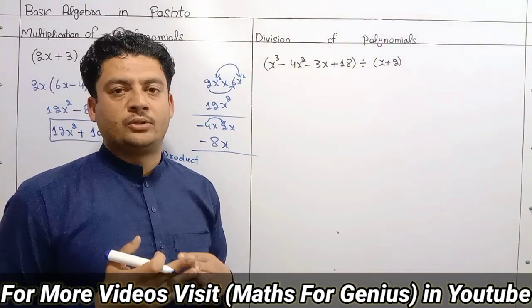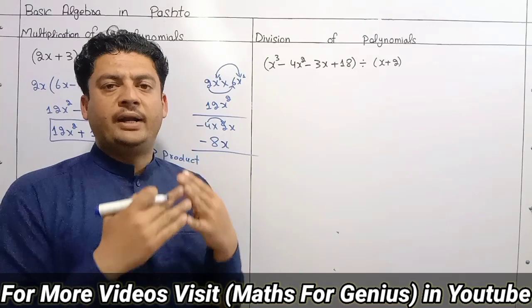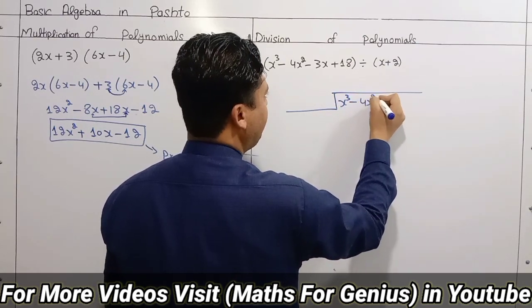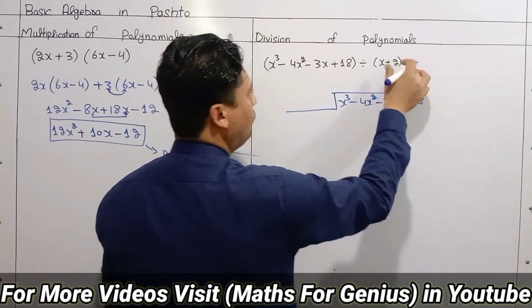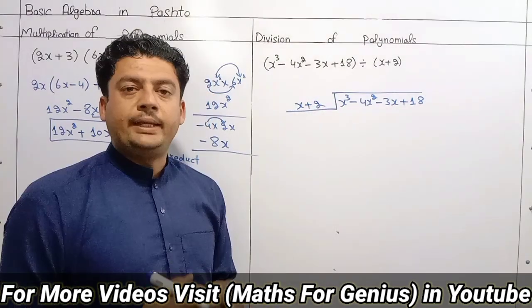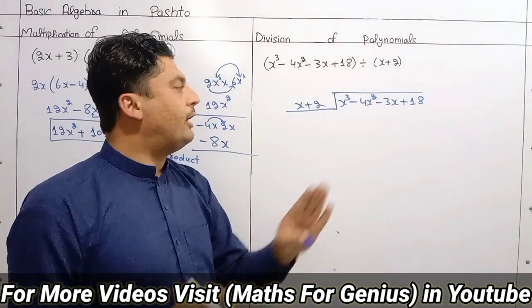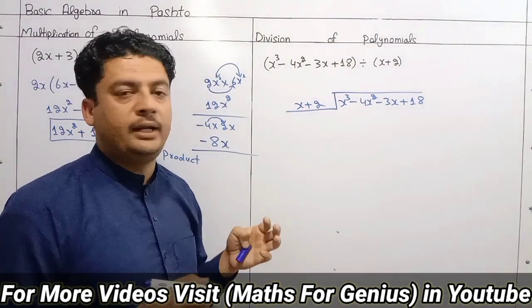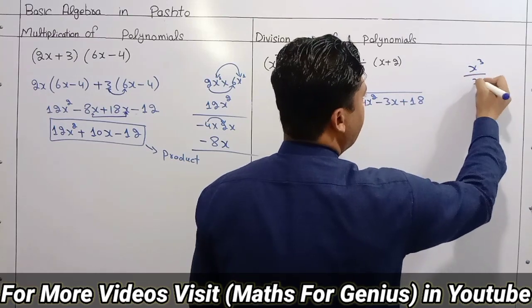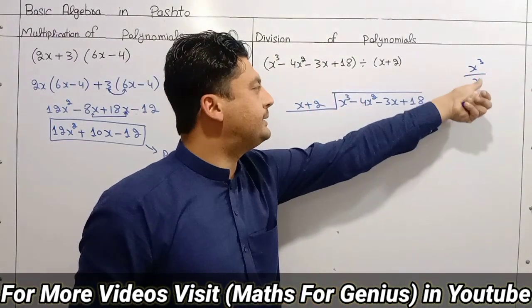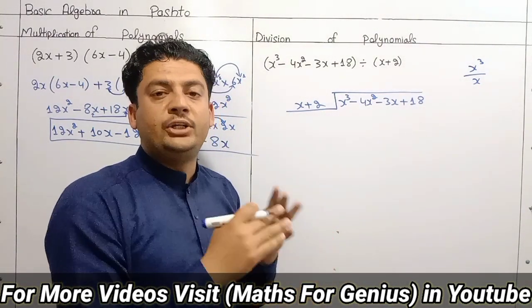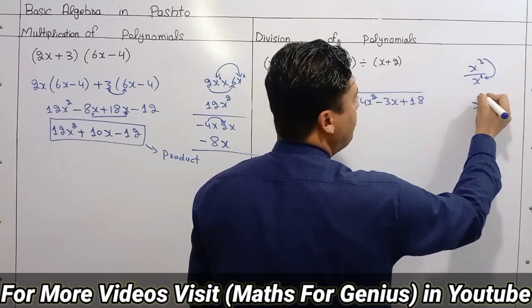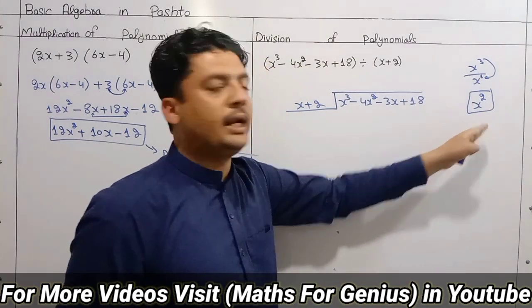Then we will divide the polynomials. We divide: x³ minus 4x² minus 3x plus 18, divided by x plus 2. The divisible is x³ and the divisor is x. So x³ divided by x — now the denominator power is 1. Now the variable x: power equals 3 minus 1, which equals 2. So x³ divided by x equals x².